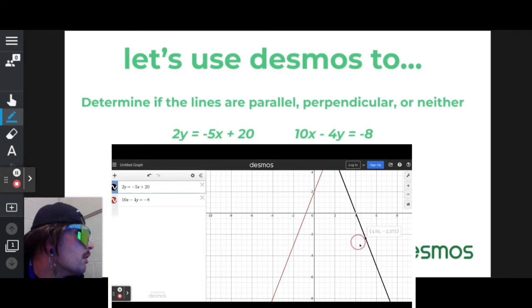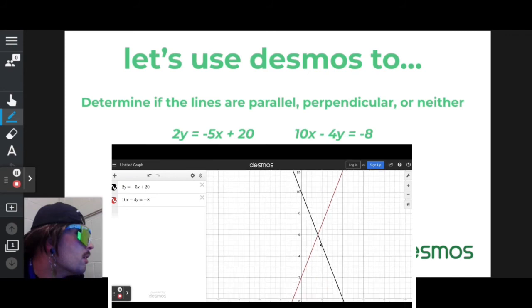Now, looking at it, I can take this, I can scroll up a little bit like so. They do intersect, so they're definitely not parallel.